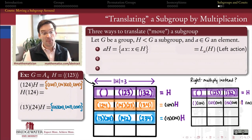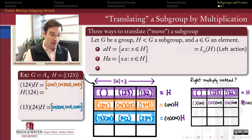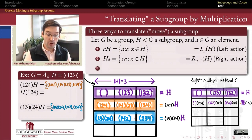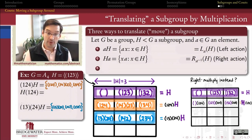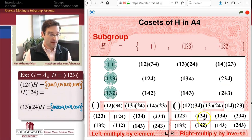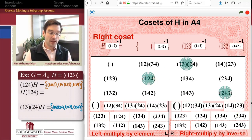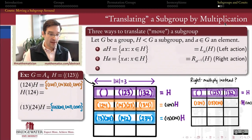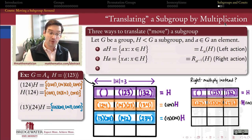Let's see if that's actually borne out. If I multiply each element of H on the right by (1 2 4), that's the same as applying a right action by the inverse of (1 2 4). Remember, the right action function acts by right multiplication by the inverse. So if we frame this in terms of right actions, we should think of it as the right action of (1 4 2). Applying this right action gives me three elements: (1 3)(2 4), (1 2 4), and (2 4 3). And this is not the same coset as what we got when we did the left action by (1 2 4). So order definitely matters when we're talking about cosets — because A4 is not an abelian group.